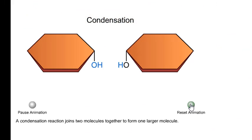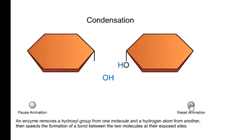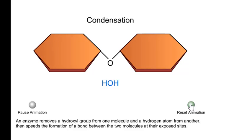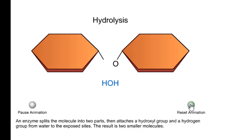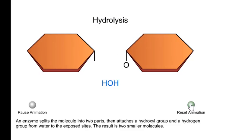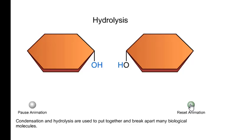A condensation reaction joins two molecules together to form one larger molecule. An enzyme removes a hydroxyl group from one molecule and a hydrogen atom from another, then speeds the formation of a bond between the two molecules at their exposed sites. Typically the discarded atoms join to form a molecule of water. Hydrolysis is a type of cleavage reaction — like condensation in reverse. An enzyme splits the molecule into two parts, attaching a hydroxyl group and a hydrogen from water to the exposed sites, resulting in two smaller molecules.